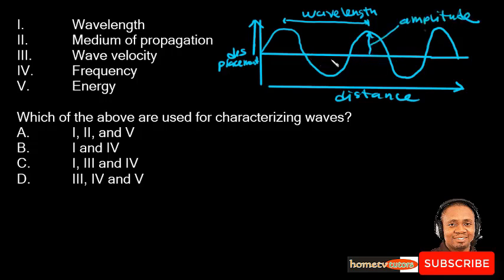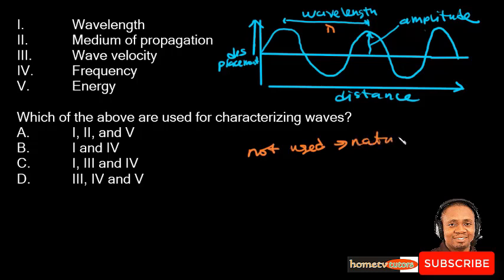This is a quick diagram showing the features of a wave. Now let us go through the options. Option 1: wavelength — wavelength is the distance between adjacent crests, measured in meters. This is used for characterizing waves. Option 2: medium of propagation — medium of propagation is not used for characterizing waves.